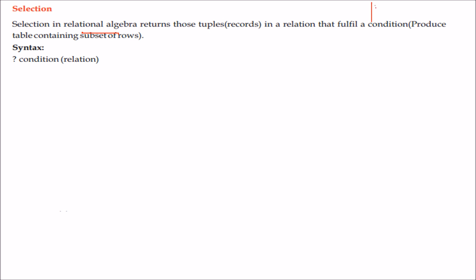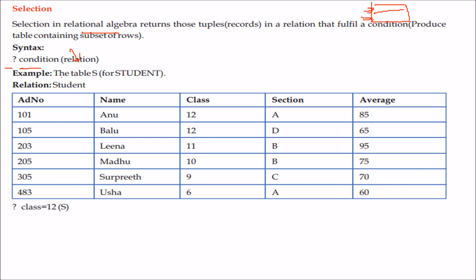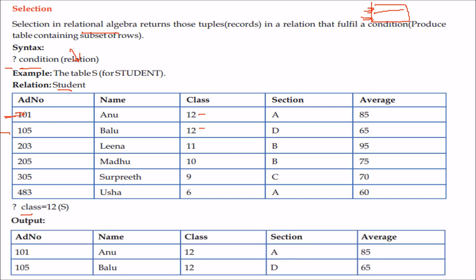Selection in relational algebra returns the tuples — records — in a relation that fulfill a certain condition. It produces a table containing a subset of rows. The syntax is σ(condition)(relation). For example, σ(class=12)(S) will return all rows of the student table S where class equals 12 — resulting in two matching rows. The input is a table and the output is also a table, but with only the matching rows.